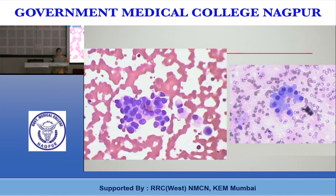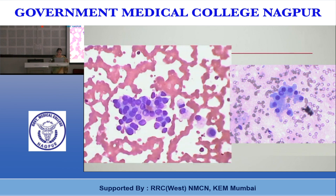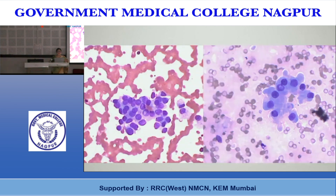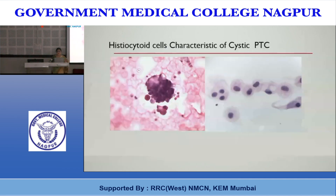Foamy histiocytes with a cluster of cells showing one nucleus with an inclusion, along with cytoplasmic blebs indicating cyst lining origin, can be placed in AUS when other features are absent. Characteristic of cystic PTC are histiocytoid cells, which must be differentiated from usual foam cells. Histiocytoid cells are large with higher N:C ratio, harder eosinophilic or vacuolated cytoplasm, and sharply defined vacuole edges — as opposed to the fluffy vacuoles of cyst macrophages.